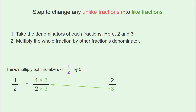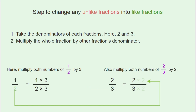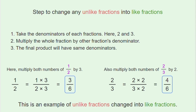Step two, multiply the whole fraction by the other fraction's denominator. Multiply both numbers of one by two by three, and also multiply both numbers of two by three by two. Step three, the final product will have the same denominators. This is an example of unlike fractions changed into like fractions.